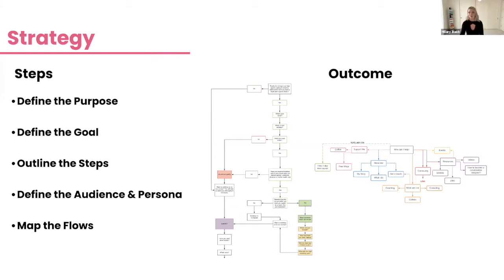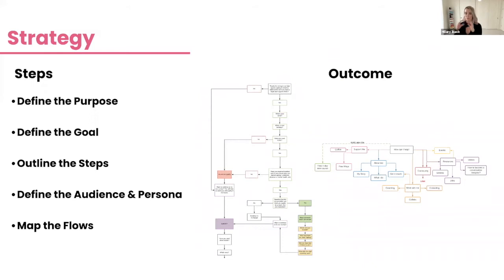The outcome of the strategy phase is creating flow charts. Some people like to put the actual copy into the boxes, but I find that makes editing difficult. What I prefer is a wider flow map that just lists the key flows — like learn about me, learn how to support me, learn about my community, learn about events — and then you build the dialogue tree from there.